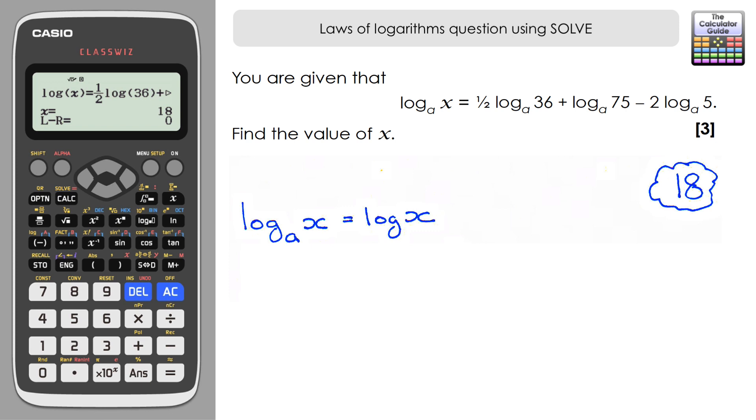The first law I'm going to use is the law where I can change a logarithm that has a coefficient. The first and third one have a coefficient - the first one has 1/2, so I'm going to raise that as the power of the argument within the logarithm. It's logarithm 36 to the power of 1/2 plus log 75, minus - and again I'm going to change the coefficient to an index number within the logarithm - so it's log of 5 squared.